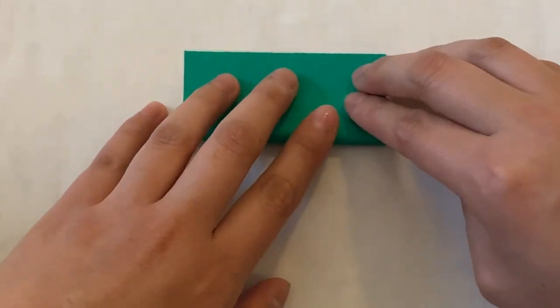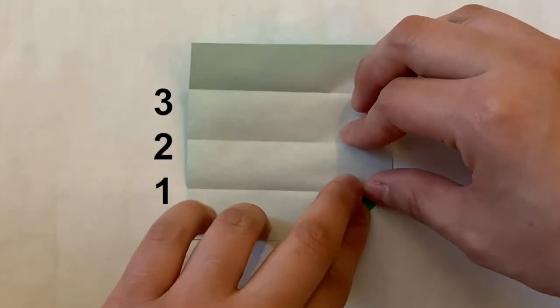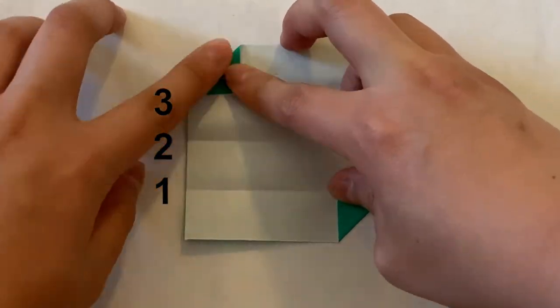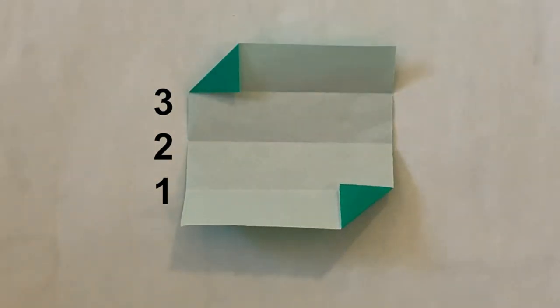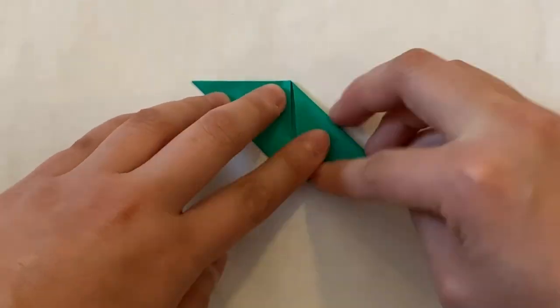Starting with a square sheet, fold into four equal parts. Then fold the bottom right corner up to the first crease, and the top left corner down to the third crease. Now fold on creases 1 and 3, and bring the bottom left corner up and the top right corner down.